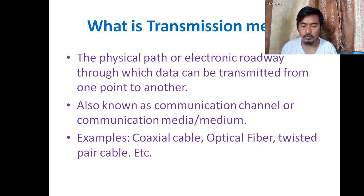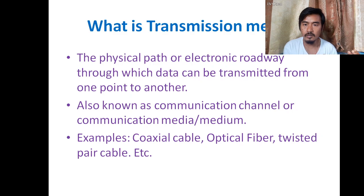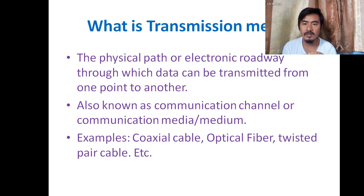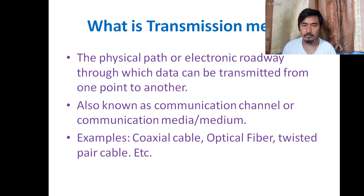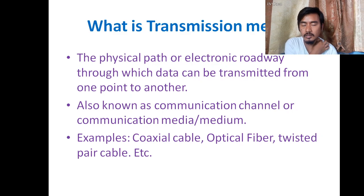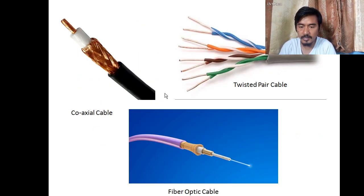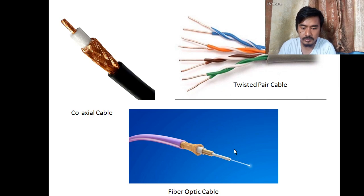Coaxial cable is used when connecting cable TV — the signal to your TV travels through coaxial cable. Optical fiber is used for internet connections, as light passes through it rather than electricity, making it very fast. Twisted pair cable is commonly used in network shops and company networks to connect computers. As you can see, coaxial cable looks one way, twisted pair cable looks another way, and fiber optic cable looks like this.